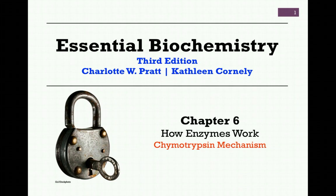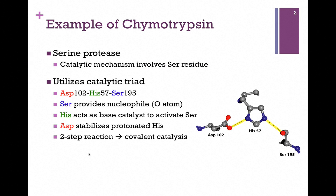We're continuing our studies in Chapter 6 on how enzymes work, and in this lesson we want to review the catalytic mechanism of the digestive enzyme chymotrypsin. It's a good example because in the course of its reaction we'll see several examples of different types of catalysts. It's part of a large family of serine proteases — a protease is simply an enzyme that digests protein, that is it breaks peptide bonds. The catalytic mechanism always involves a serine residue, hence the name.